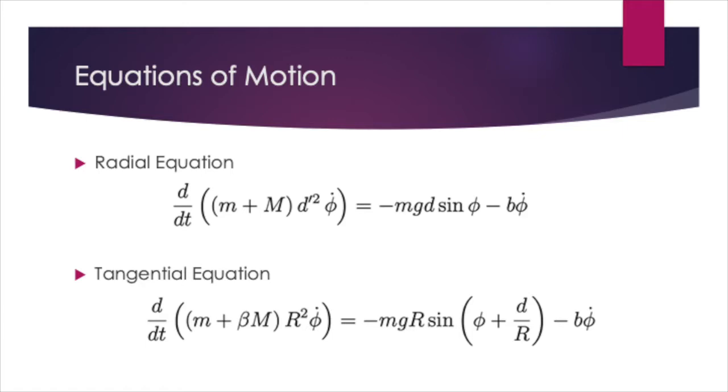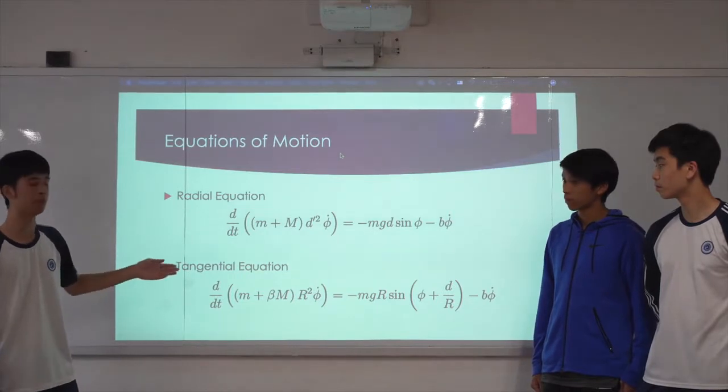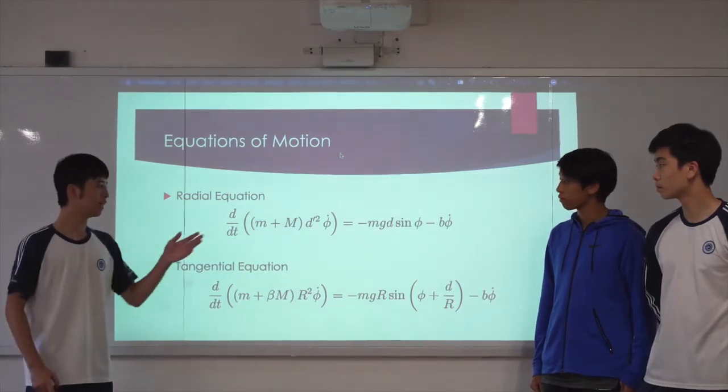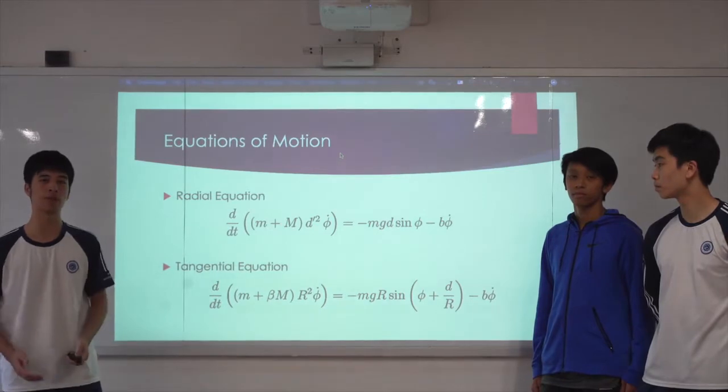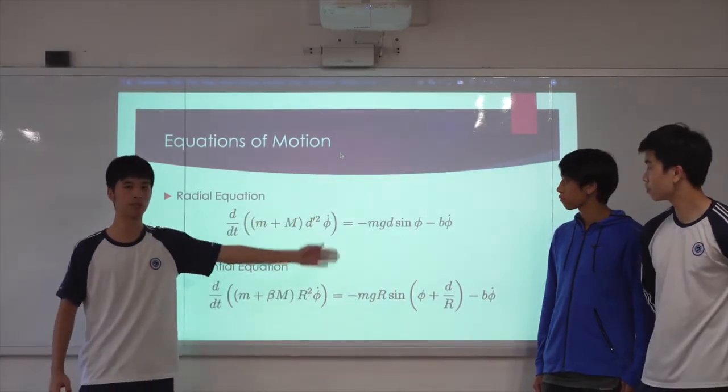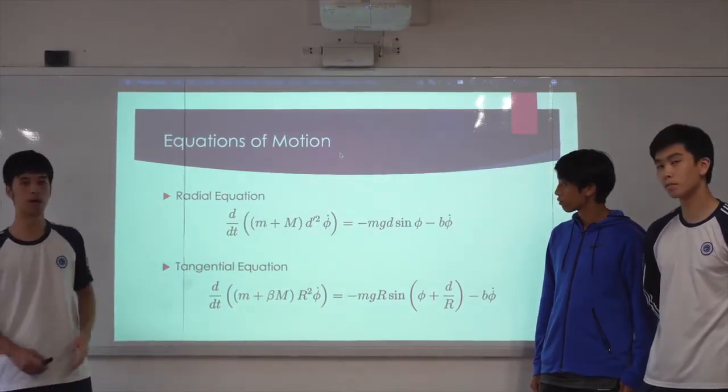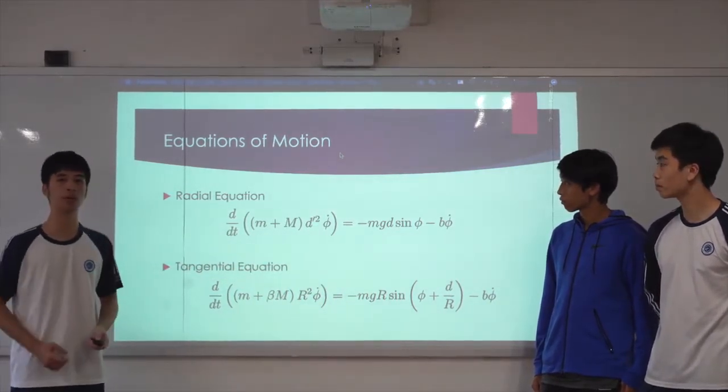We can then write the equations of motion for each of these systems, which are given by these two equations. The upper one is the radial equation, and the bottom is the tangential equation. These equations of motion are based on the differential relationship between torque and angular momentum, where on the right side is the net torque on the wheel, and on the left side is the change of angular momentum over time.